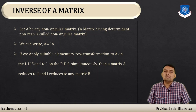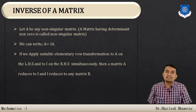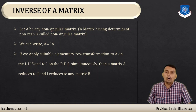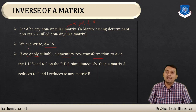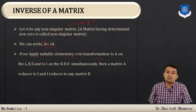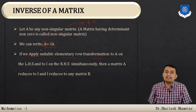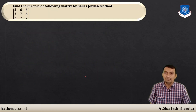Now let us discuss the inverse of a matrix. If det(A) ≠ 0, then A is non-singular and A⁻¹ exists. We write A = I₃·A and apply suitable elementary row operations simultaneously to A on the left and to I on the right. When A is reduced to I, then I is reduced to a matrix B, and that matrix B is A⁻¹.